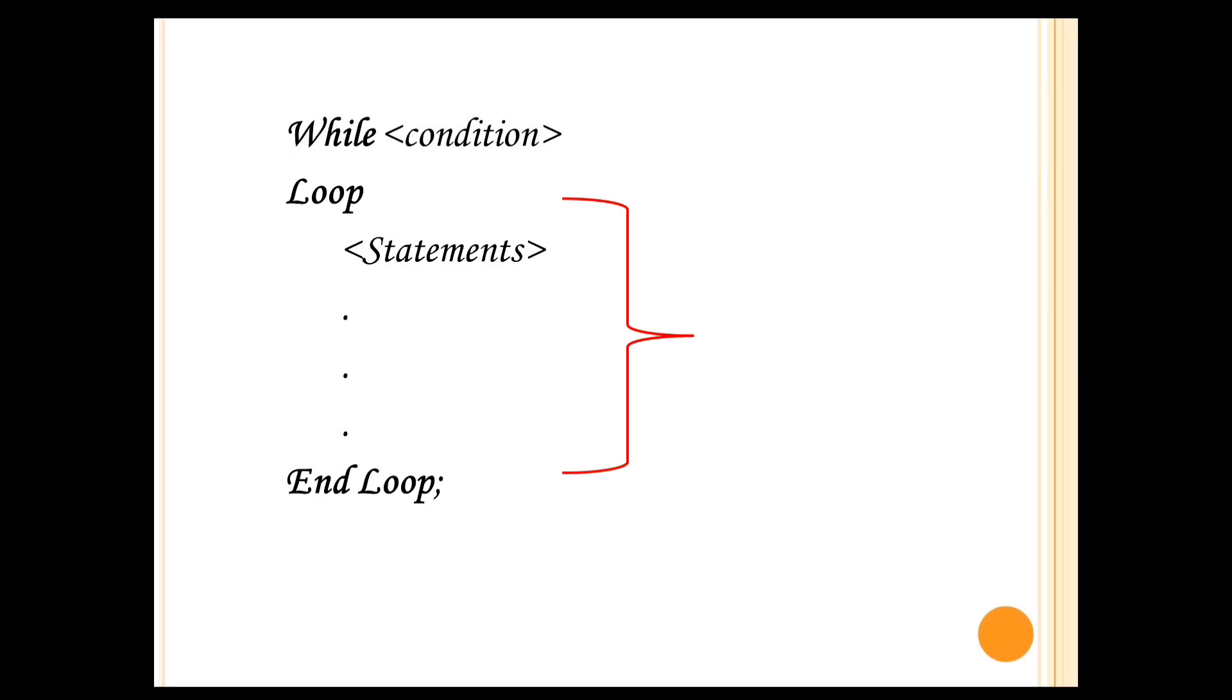The control will enter the loop only when this condition will be evaluated to be true and execute the statements inside the loop. The iteration will continue until the condition is evaluated to be false. Once when the condition becomes false, the control comes out of the loop.